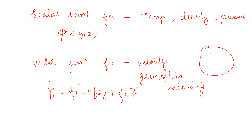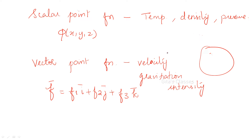Now let us see scalar point function and vector point function. Scalar point function means if you consider any region, for every point, if you assign one scalar value, then that function is said to be a scalar point function. For example, temperature at any instant of time, the density of any body, and water pressure at each point in an ocean — they are all examples of scalar point functions.